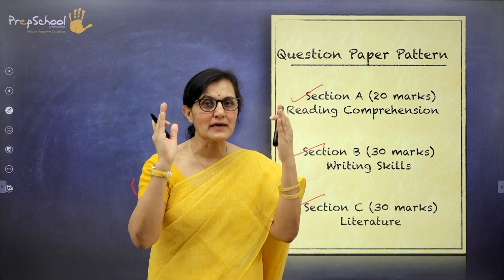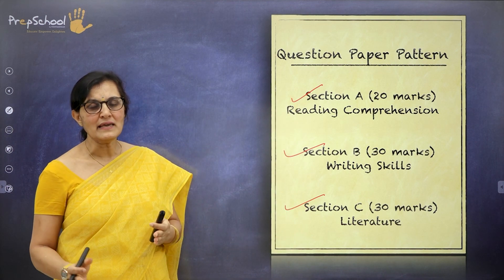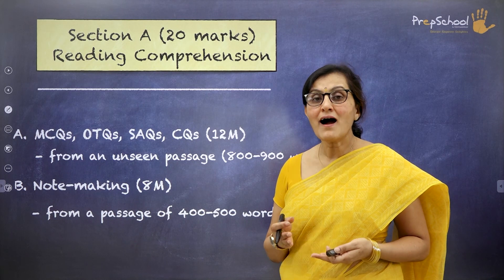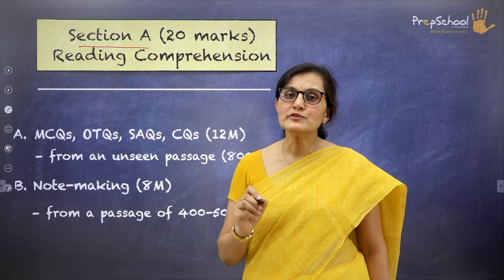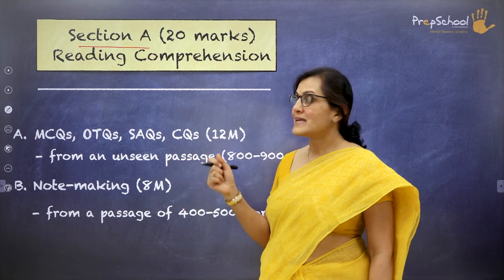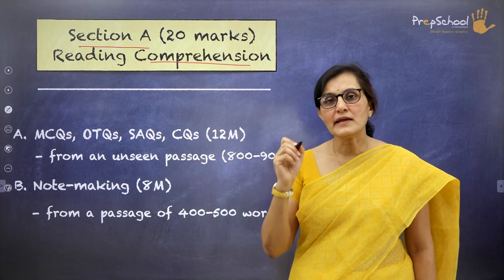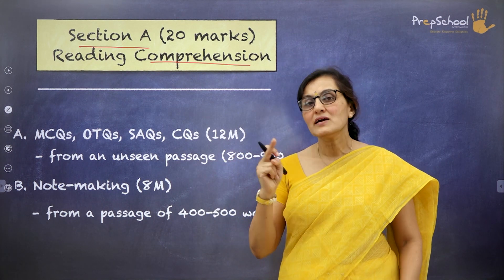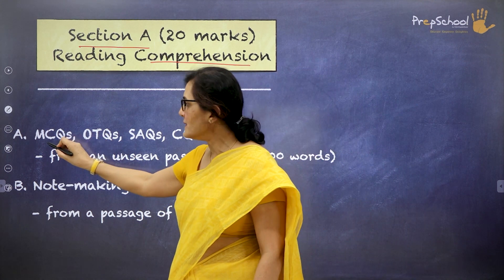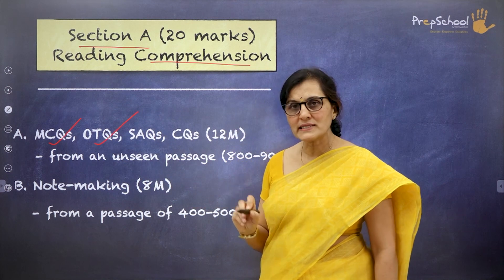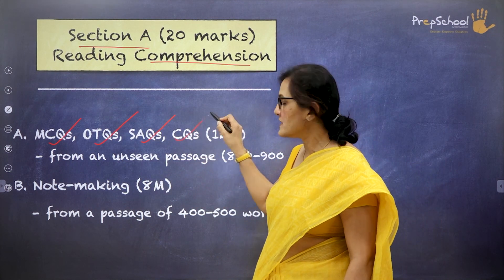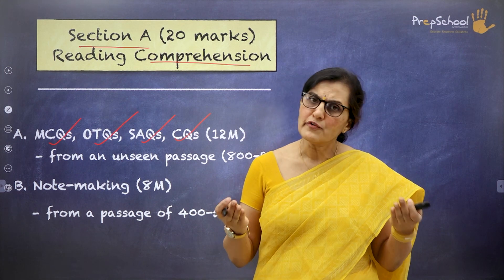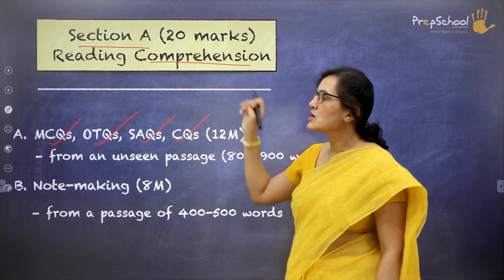Your question paper is into three parts A, B, and C — reading comprehension, writing skills, and literature. Let's see how Section A looks. Most of you are familiar with this section. Comprehension involves reading a paragraph, understanding it, and answering related questions. Questions could be multiple choice, objective type, short answer, or comprehensive questions. The paragraph could be descriptive or factual, a poem, fiction, or an article.